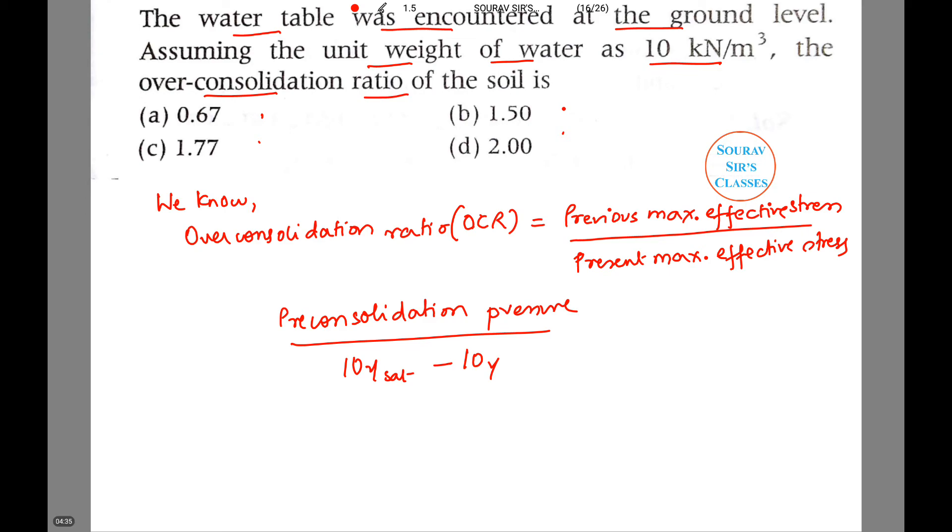So let us now substitute the values. The pre-consolidation pressure is given to be 90. The saturated unit weight is 16, and the unit weight of water is 10.